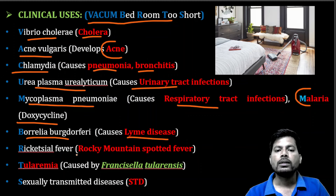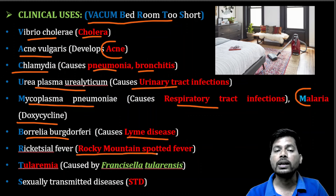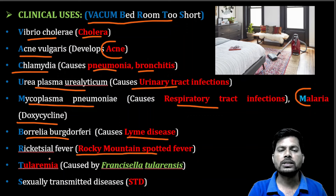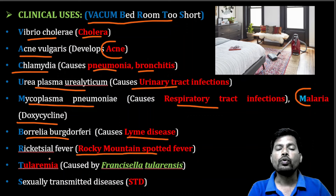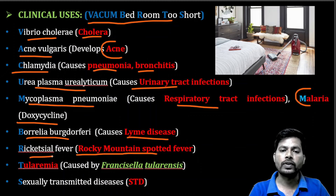Tetracycline helps in the treatment of Rocky Mountain Spotted Fever, a type of cattle disease transmitted from animals. Because of close contact with animals, or consuming animal products like milk, we can get zoonotic diseases. Rocky Mountain Spotted Fever is caused by Rickettsia species.